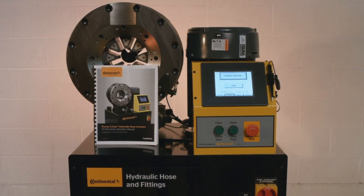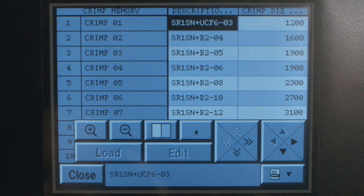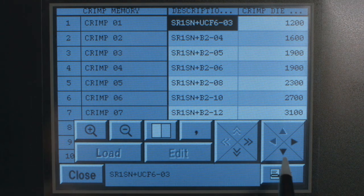The ACT controller also comes pre-installed with all standard Continental crimps. These can be accessed through the crimp memory home screen.